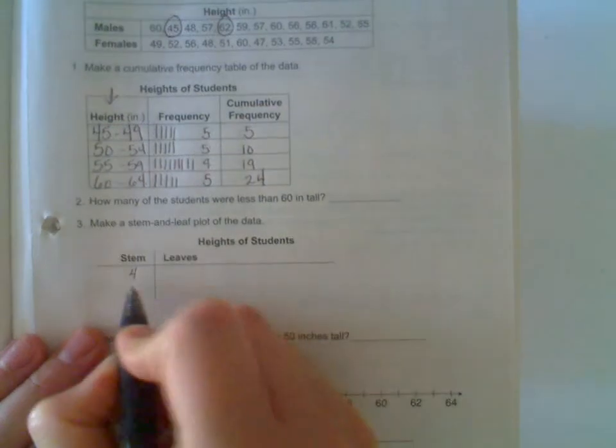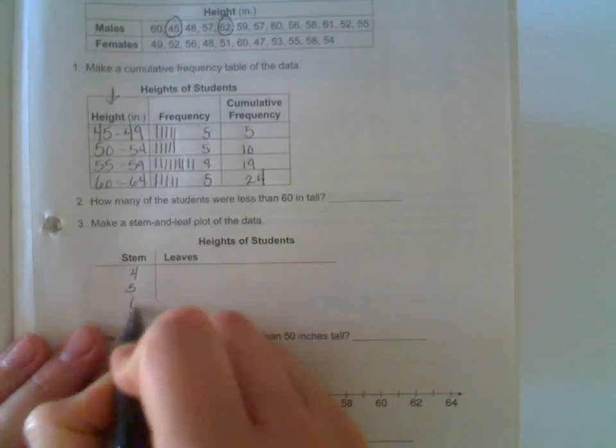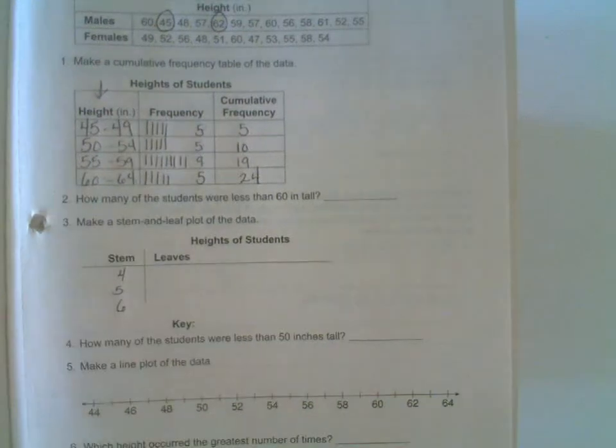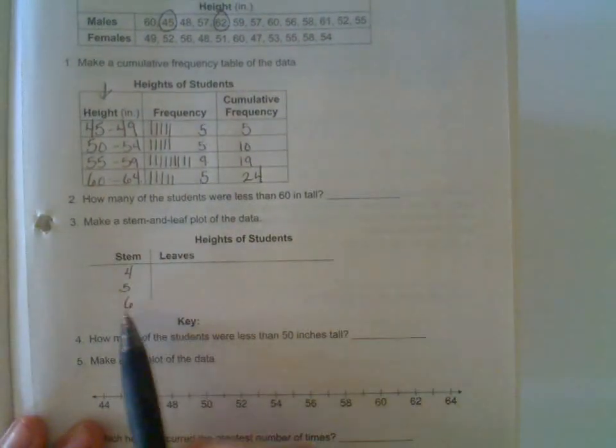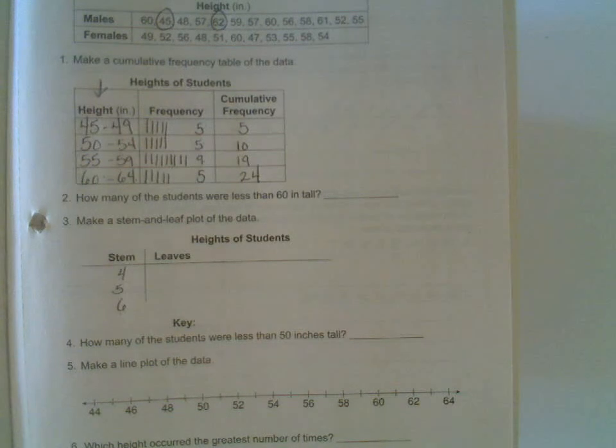In other words, the 40s are all going to get grouped together, the 50s are going to get grouped together, and the 60s are going to get grouped together. As you can see over here in the stem, I wrote 4, 5, and 6, and I did that because everything starts with a 4, 5, or 6.